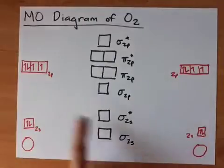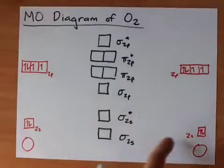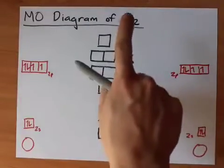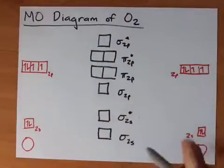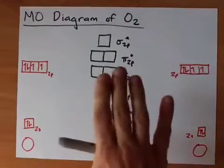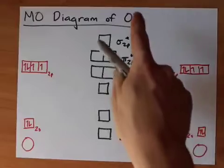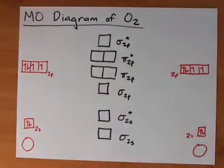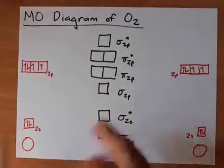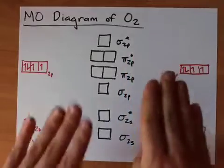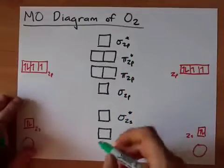Anyways, what really matters here is you counting up the number of valence electrons that O2 has. Six from here and six from here makes 12, and there's no adjustments for charge because it's a neutral molecule. So we fill from the bottom up, following the Aufbau principle and Hund's rule.